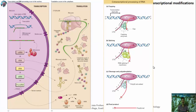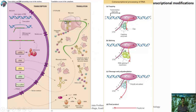Post-transcriptional modification occurs for different types of RNA, including snRNA, rRNA, hnRNA, mRNA, and miRNA. Once these RNAs are formed during transcription, they are modified in different ways before being converted into protein. Most translation processes occur in the cytoplasm, whereas transcription occurs in the nucleoplasm of eukaryotic cells. Post-transcriptional modifications are most significant in eukaryotes.